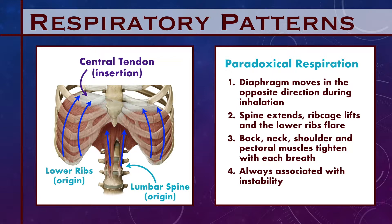We often find the rib cage is flared, the abdomen is hollowed, the pelvis is tilted forward, and the back rests in extension. Does it make sense for someone's neck, shoulders, and back to be moving with each and every breath they take? This pattern is also associated with a weak core and is an indicator of instability.